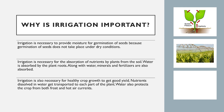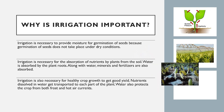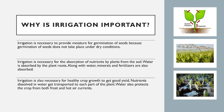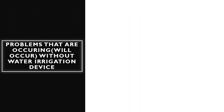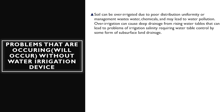Water also protects the crop from both frost and hot air currents. However, soil can be over-irrigated due to poor distribution, uniformity, or management, which wastes water and chemicals and may lead to water pollution. Over-irrigation can cause deep drainage from rising water tables, leading to problems of irrigation salinity requiring water table control by some form of subsurface land drainage.